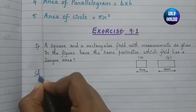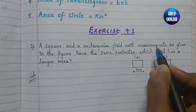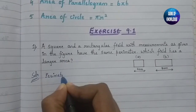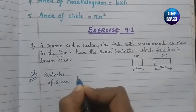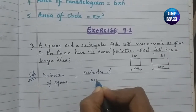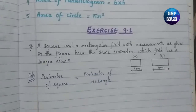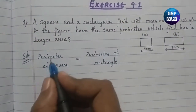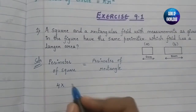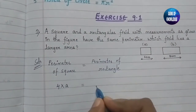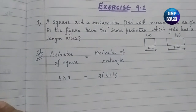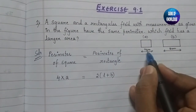As instructed in the question, since the square and rectangular field have the same perimeter, we write: perimeter of square = perimeter of rectangle. The formula gives us 4 × a = 2(l + b), which expands to 4 × 60 = 2l + 2b.